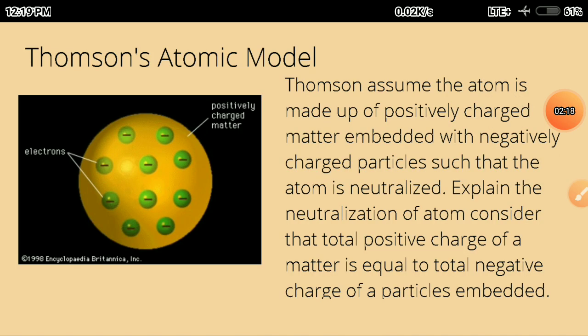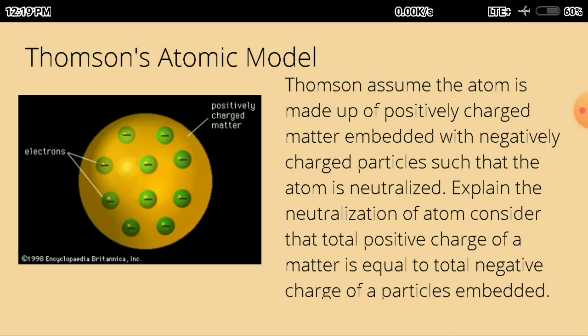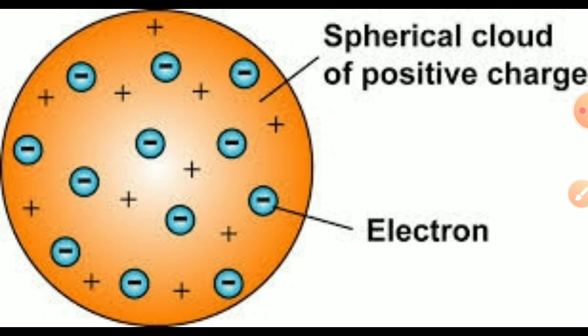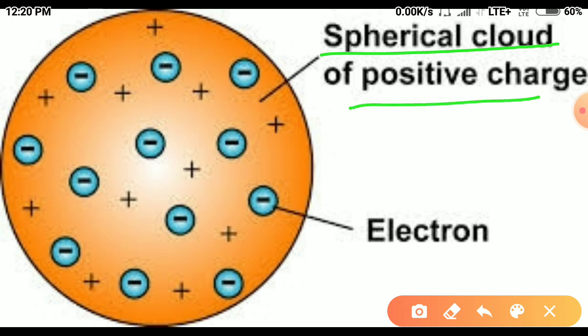Thomson assumed that the atom is made up of positively charged particles. The complete atom's whole volume is made up of a spherical cloud of positive charge, and a few negatively charged particles — electrons — are embedded within that volume.